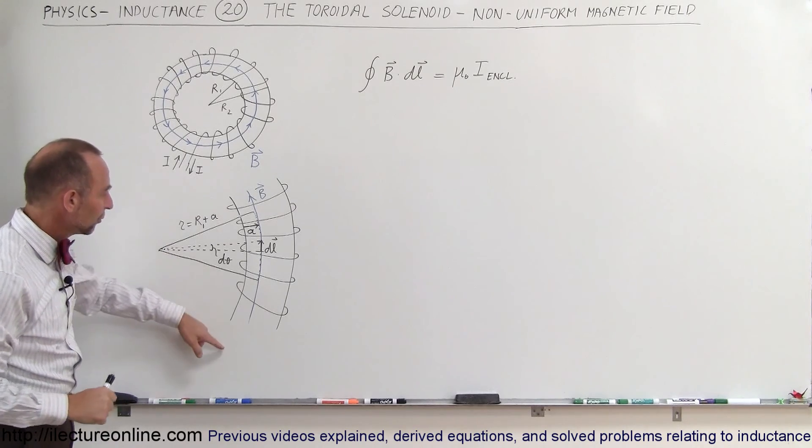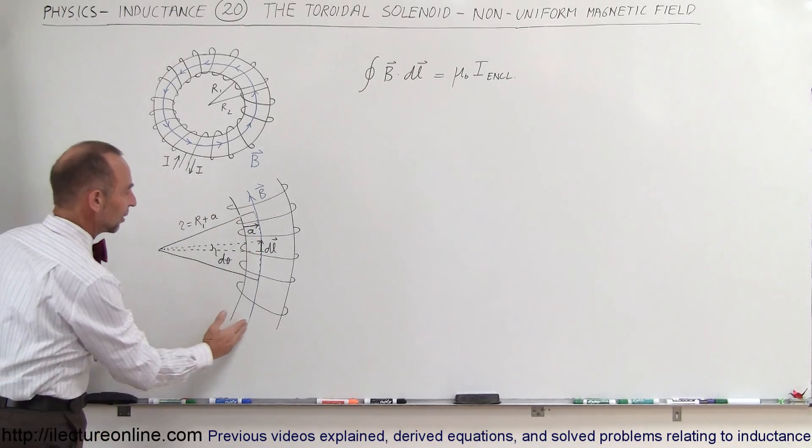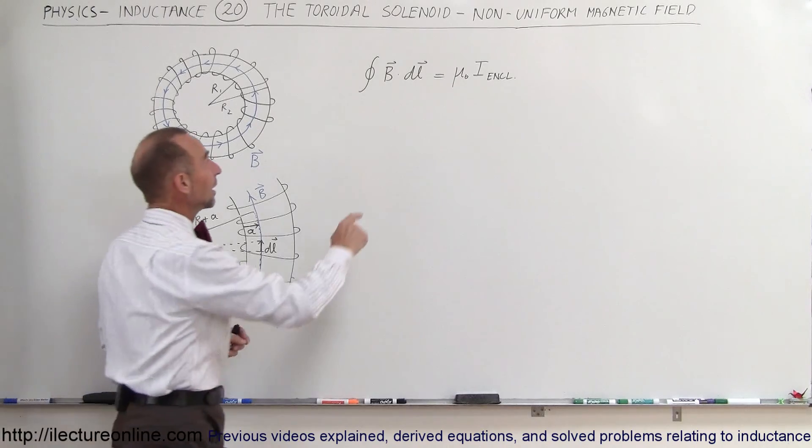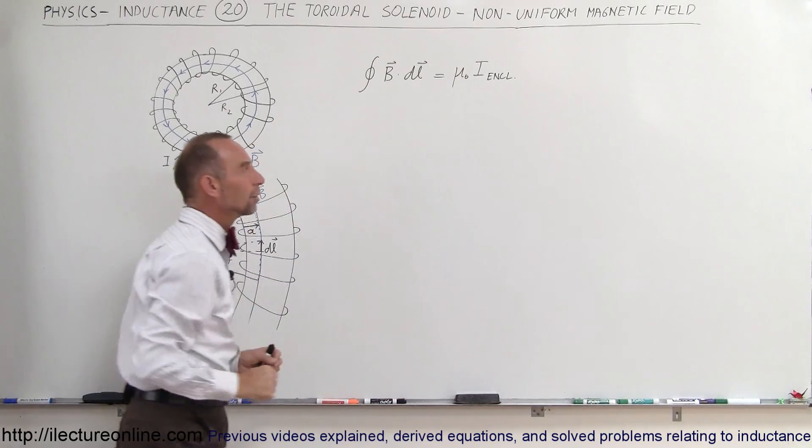So what we're going to do is we're going to do a closed loop integral and here's a small section DL and of course there is the magnetic field B and we know from Ampere's law that the closed loop integral of B dot DL is equal to mu sub naut times the current enclosed.